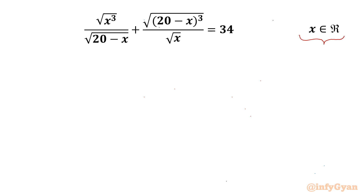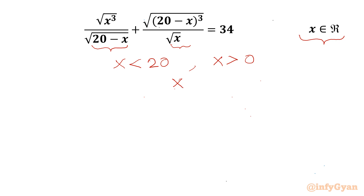Let's get started by writing the condition on x. For the solution to be real, the radicand should be positive. So x should be less than 20 for the first denominator, and x should be greater than 0 for the second. Taking the intersection of these two, x should lie in the interval (0, 20).